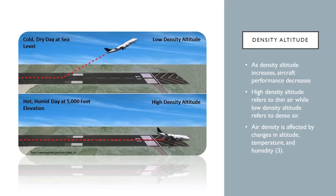In addition to those factors, there's a concept called density altitude — something we're exposed to as drone pilots when studying for the Part 107 exam. Density altitude is essentially how dense the air is and the factors that affect that denseness. Air density is affected by changes in temperature and humidity. As your density altitude increases, your aircraft performance decreases.